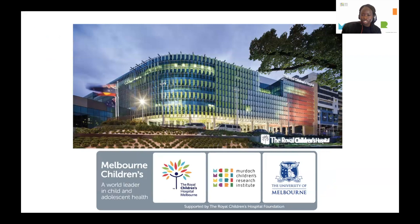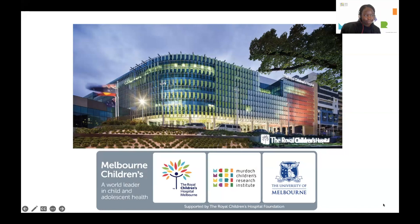Ken and I work at the Murdoch Children's Research Institute in Melbourne. We are the largest child health research institute in the Southern Hemisphere and the third largest globally. We are a key part of Melbourne Children's Campus, which brings together four organizations: Murdoch Children's Research Institute, the Royal Children's Hospital, the University of Melbourne's Department of Paediatrics, and the Royal Children's Hospital Foundation, all at a single campus in Parkville. Our campus purpose is to advance child and adolescent health through prevention, early intervention, and health promotion, together with the highest quality clinical care, research, education, and training.